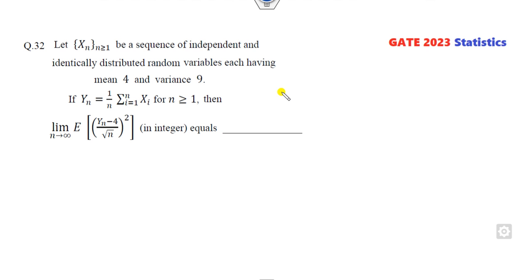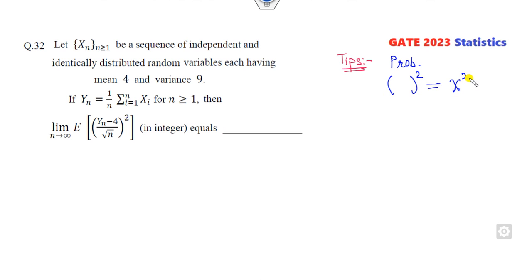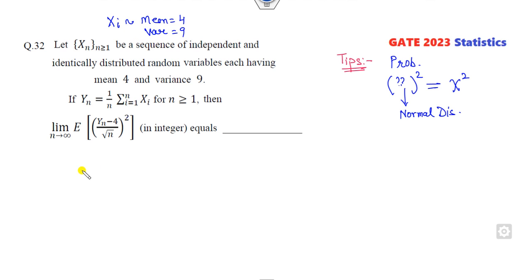Look at the next question. I will give a very simple tip that is useful for CSR, UGC, IIT JAM, NVHM, and any other exam. Whenever there is a question related to probability and a scale like this, you always find this forms a chi-square, provided you convert whatever is given into the normal distribution. Now, what is given: X_i follows mean 4 and variance 9.